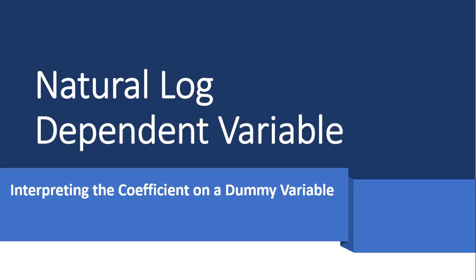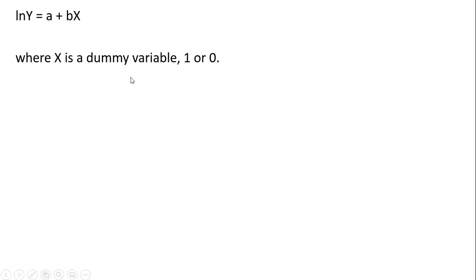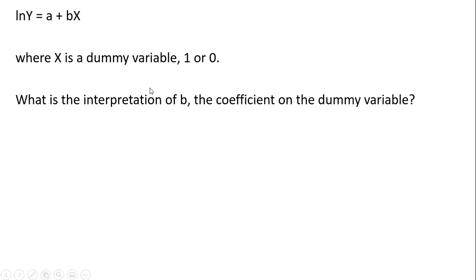Hello. In this video, we're going to look at interpreting the coefficient on a dummy variable when the dependent variable is in natural logs. We're going to start with a regression equation: the natural log of y equals a plus bx, where x is a dummy variable, either 1 or 0. We want to figure out what is the interpretation of the coefficient on the dummy variable b.